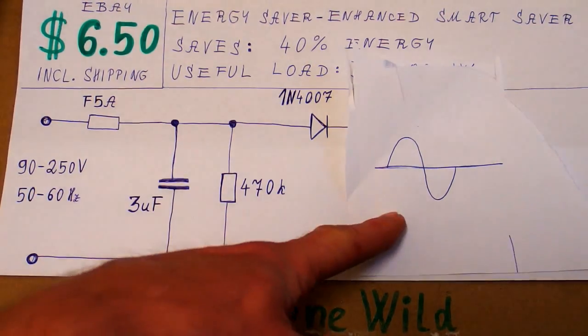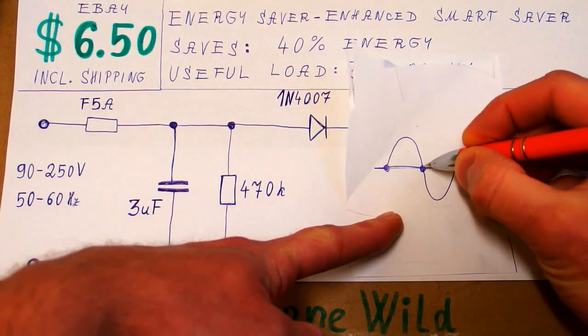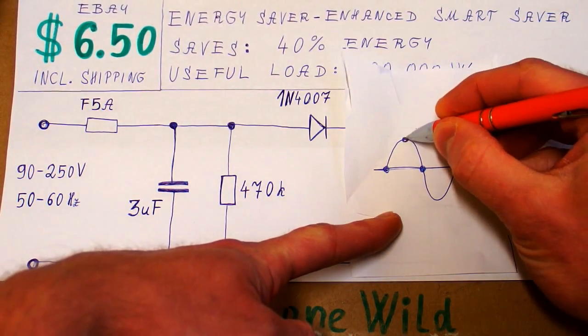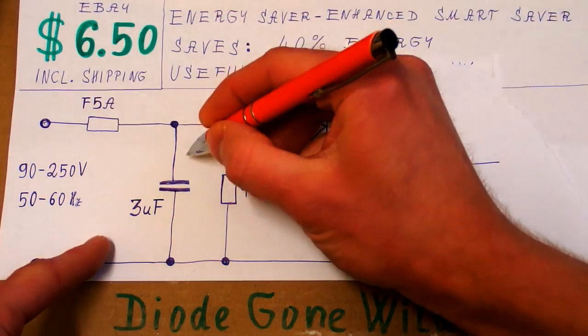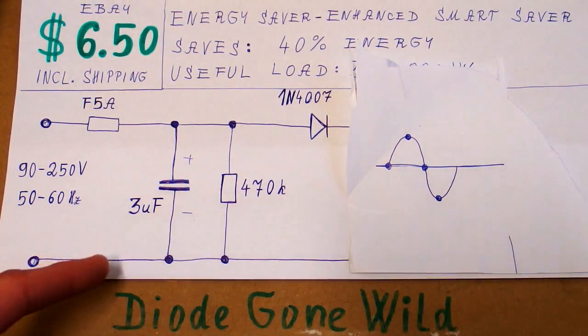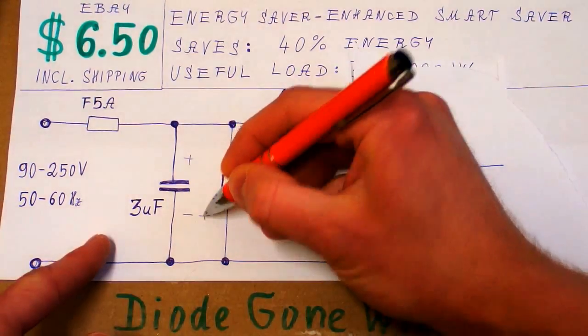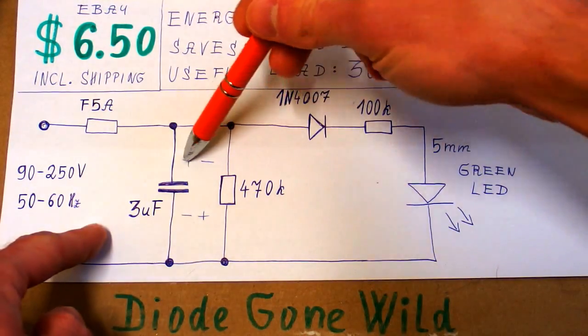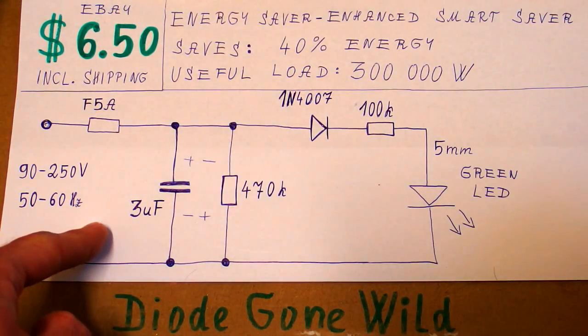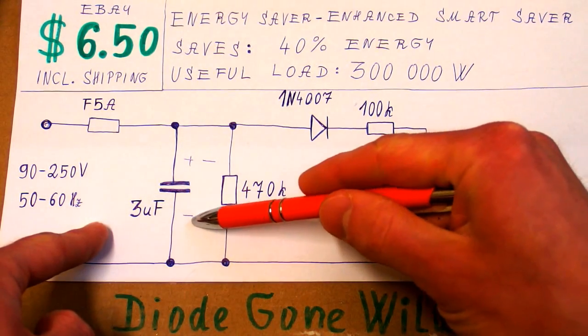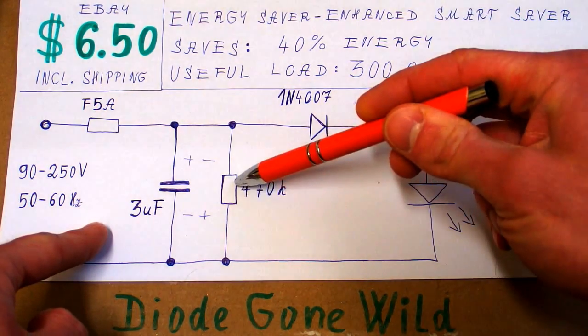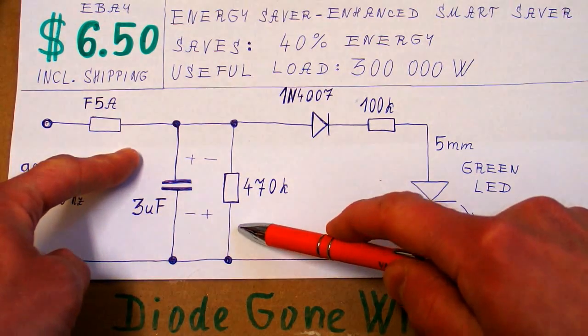If you unplug it in this moment or this one for example there is no charge in the capacitor but if you unplug it here the capacitor will stay charged in this polarity and if you unplug it for example here the capacitor will be charged in another polarity. If this side is charged positive it will discharge through the resistor but also through the LED. If it's charged in the other polarity where this one is positive it cannot go through the LED because of this diode so it will only discharge through this resistor and it takes several seconds before the capacitor is discharged down to a safe voltage.